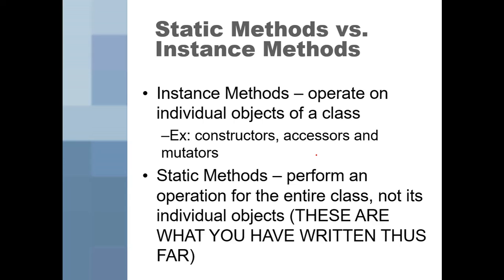Instance methods operate on individual objects of a class — that'll be your constructors, accessors, and mutators. Static methods perform an operation on an entire class, not its individual objects. Static methods are like when you made a function in computer principles — you called it to do something and then it came back. You could also make a static method alongside main, like a sum method.